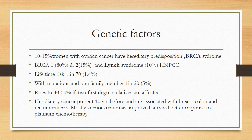Lifetime risk of developing ovarian cancer is 1 in 70 (1.4%). However, when there are mutations and one family member is affected, the risk rises to 1 in 20 (5%) — five times more. It rises to 40 to 50% if there are two first-degree relatives affected. Hereditary cancers present 10 years earlier and are associated with breast, colon, and rectal cancers. They are mostly adenocarcinomas with improved survival and better response to platinum chemotherapy.